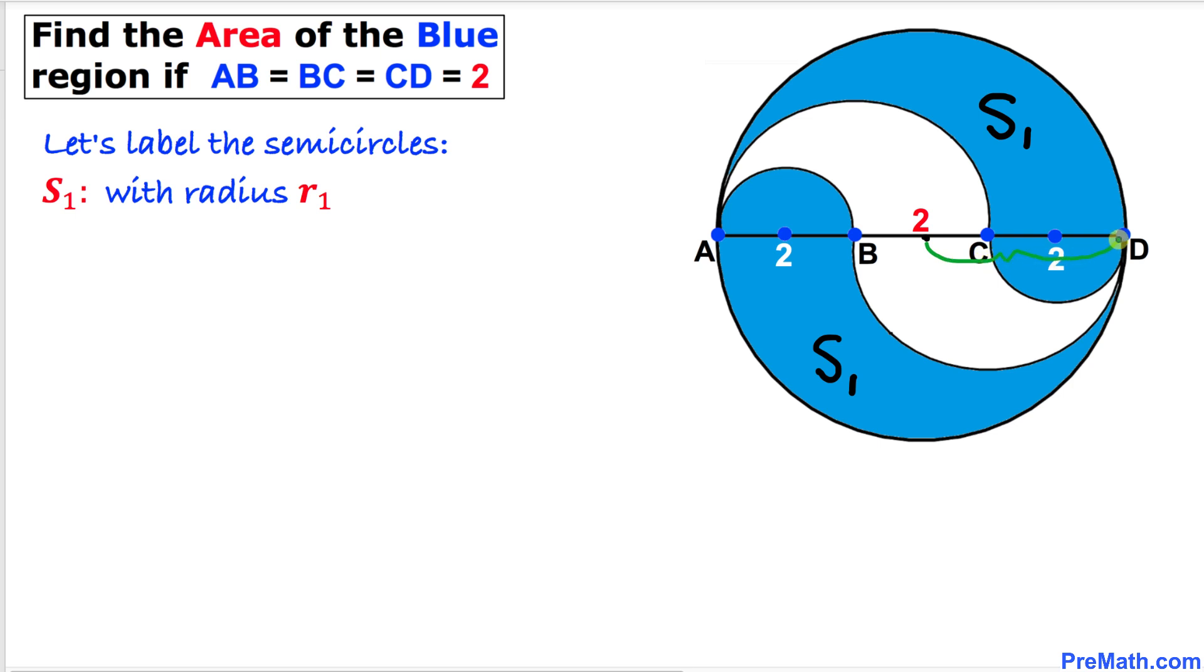Thus, this semicircle S1 has a radius R1 equal to 3 units. When we combine these two semicircles, we get a full circle C1 with radius R1 equal to 3 units.